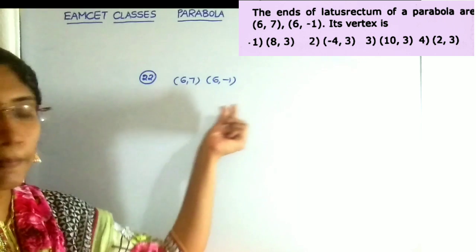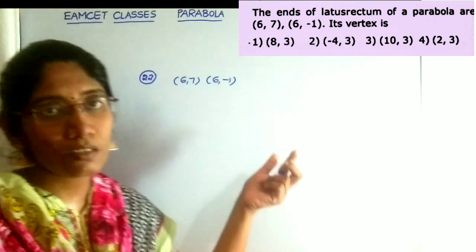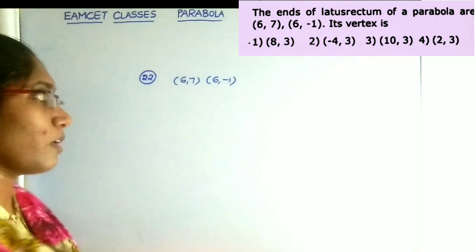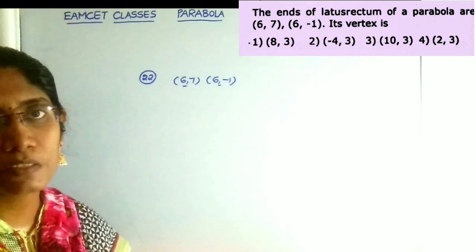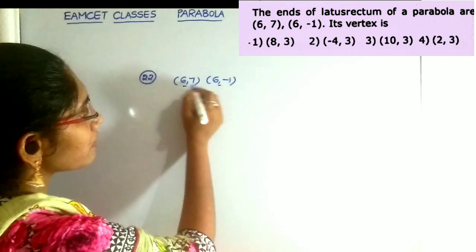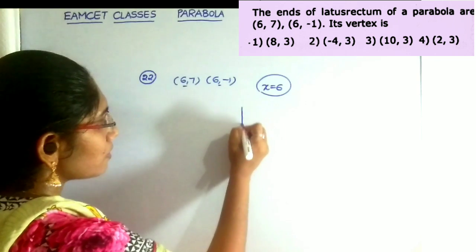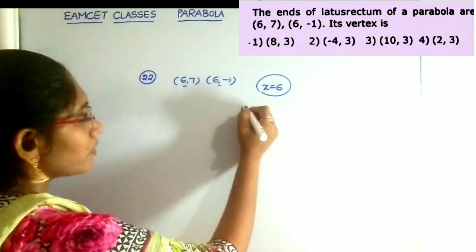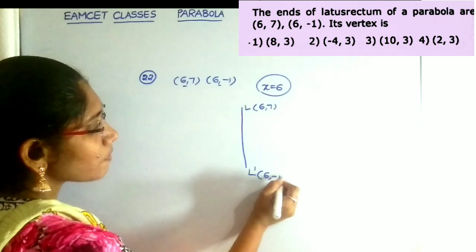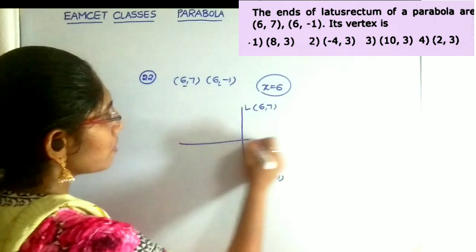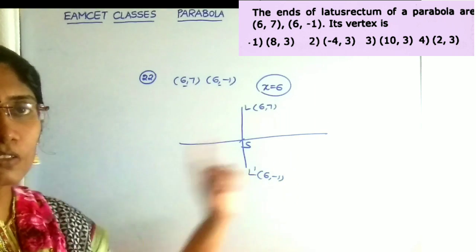The next question: the ends of the latus rectum of a parabola are 6 comma 7 and 6 comma minus 1. Then what is its vertex? The given points are 6 comma 7 and 6 comma minus 1. The line passing through these two points is x equals 6, which is a line parallel to the y-axis. The latus rectum is the line that passes through the focus perpendicular to the axis of the parabola.